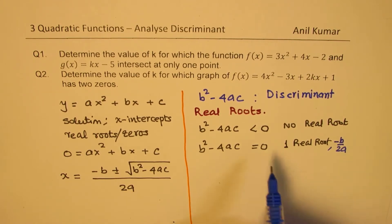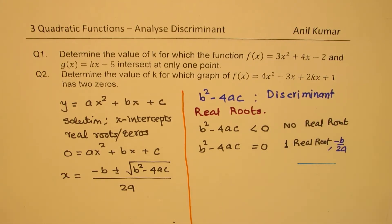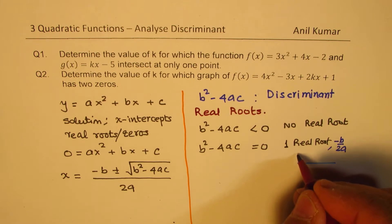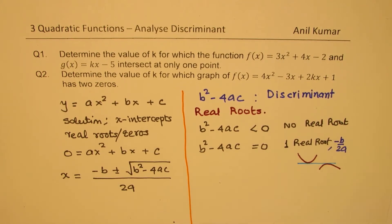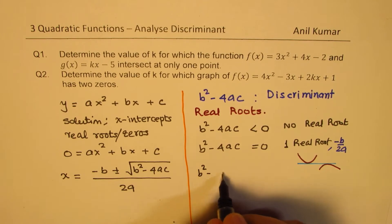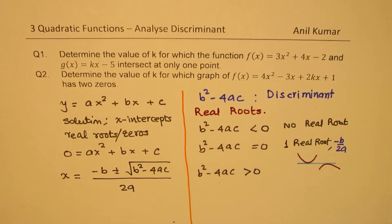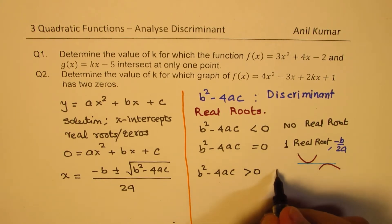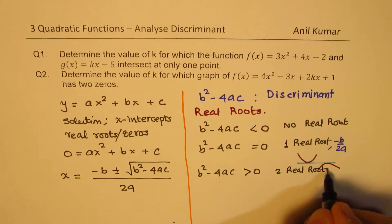As you can see from here, the situation is something like this: on the x-axis, your parabola has a vertex — it could be opening upward or downward. That is the one real root. If b² − 4ac is greater than 0, in that case we will have two real roots.